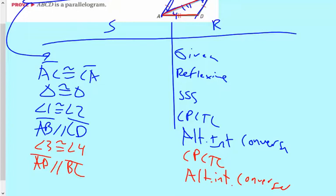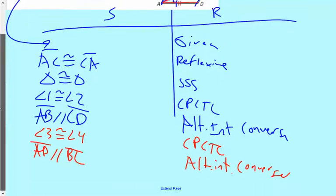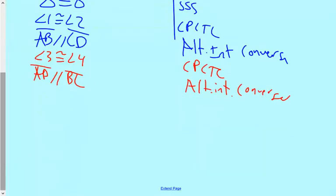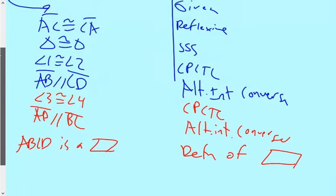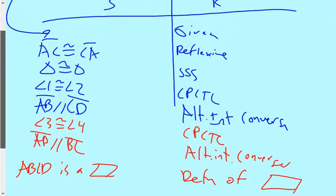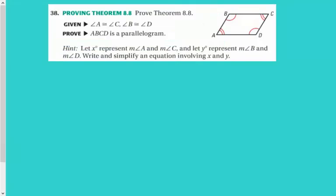Again, alternate interior converse. And because I have both sets of lines parallel, that makes ABCD a parallelogram. So ABCD is a parallelogram by definition of parallelogram. If both sets of opposite sides are parallel, then the shape's a parallelogram.